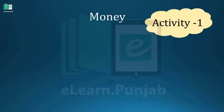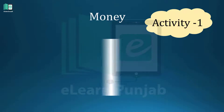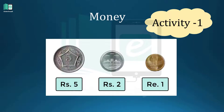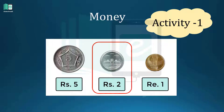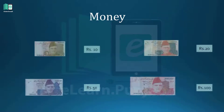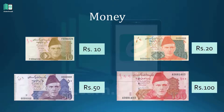Now come to activity number one, in which you can see some coins: a coin of rupees five, a coin of rupees two, and a coin of rupees one. Also, these are some notes which are used in daily life.